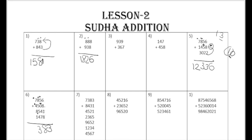Now start counting the thousands position. 8 plus 1 is 9, 9 plus 4 is 13, plus sudha makes 14 - write sudha here and carry 4. Then 4 plus 7 is 11, plus this sudha makes 12 - write sudha here and write 2 here. How many sudhas are left in the open place? 1 and 2, so write down 2 here.